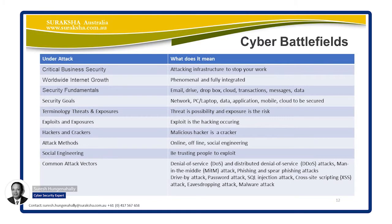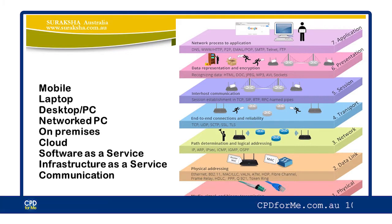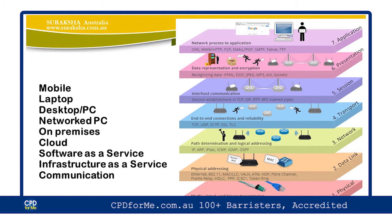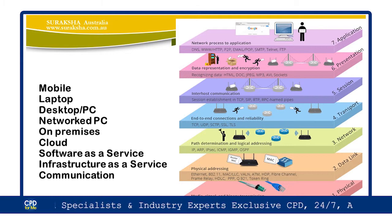There's a laundry list here — I'll touch upon the ones that will leave an impression on your mind. The primary purpose is not just critical business security; it's somebody attacking your infrastructure to stop you from working. When you use your device to talk to something out there, the corruption or denial that can happen could emerge from any one of the layers in the architecture.